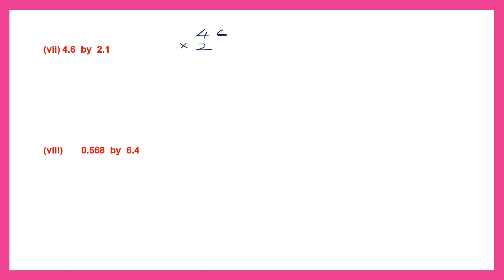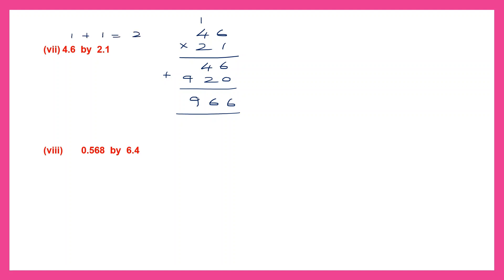Question 7: 4.6 by 2.1. Both are decimal numbers. We ignore the point and multiply 46 by 21. 1 six is 6, 1 four is 4. Second step: 2 sixes are 12 carry 1, 2 fours are 8 plus 1 is 9. Adding up: 6, 6, 9 giving 966. Now go back to the question: 4.6 has 1 decimal place and 2.1 has 1 decimal place. 1 plus 1 — totally there are 2 decimal places. So our answer also should have 2 decimal places, giving 9.66.